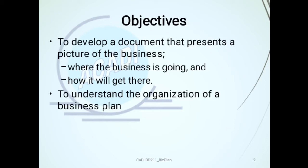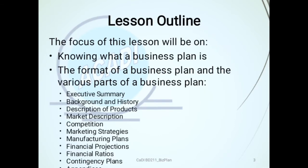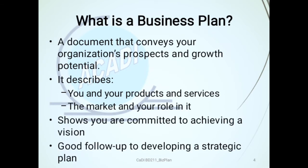The second objective is to understand the organization of a business plan. The lesson outline covers: knowing what a business plan is, the format of a business plan, and the various parts — including executive summary, background and history, description of product, market description, competition, marketing strategies, manufacturing plans, financial projections, financial ratios, and contingency plans.